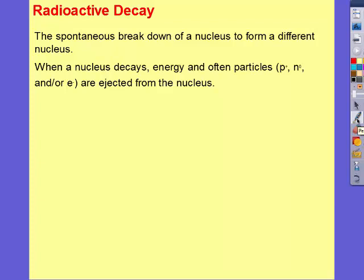Radioactive decay is the spontaneous breakdown of a nucleus to form a different nucleus. When a nucleus decays, energy and often particles such as protons, neutrons, and electrons are ejected from the nucleus.